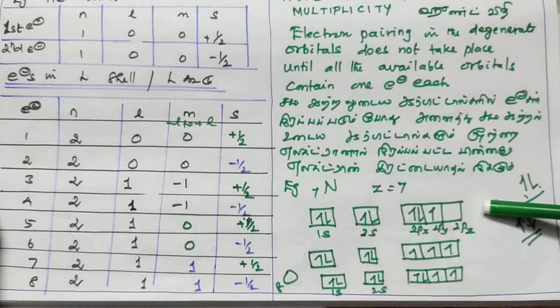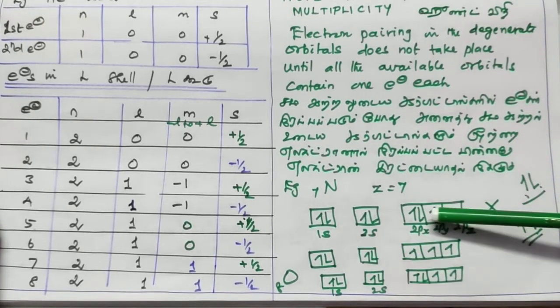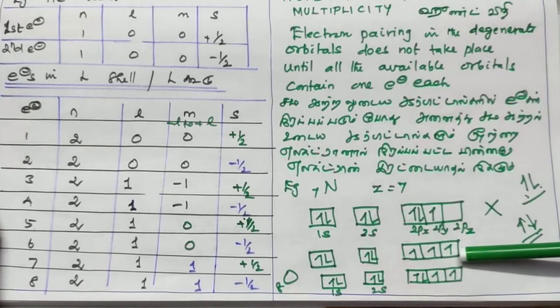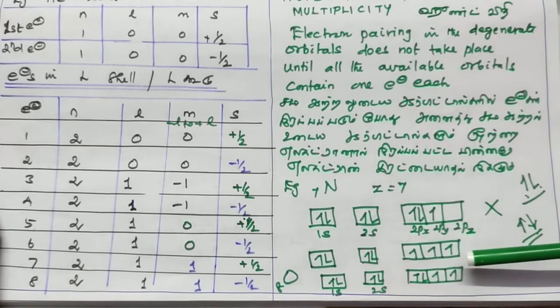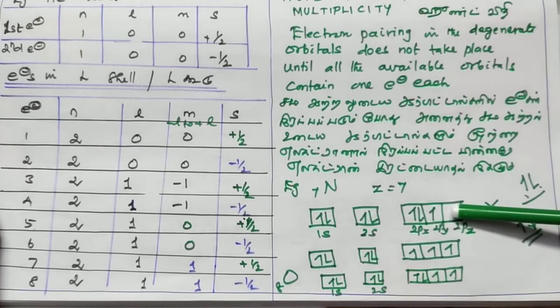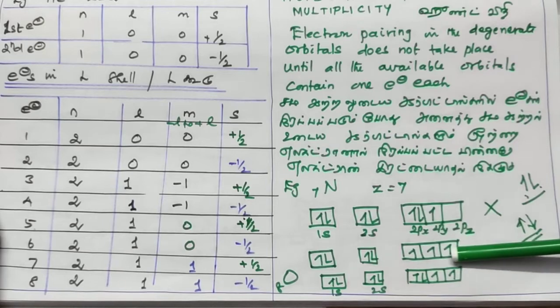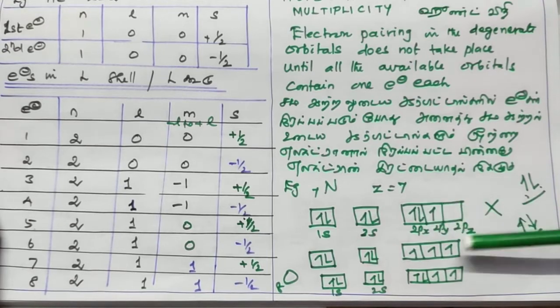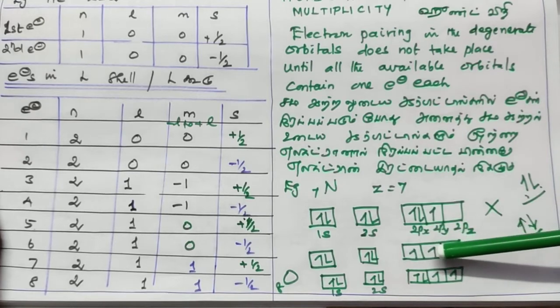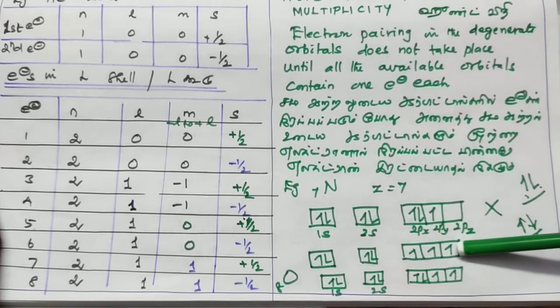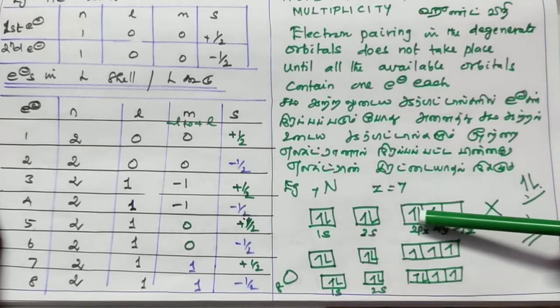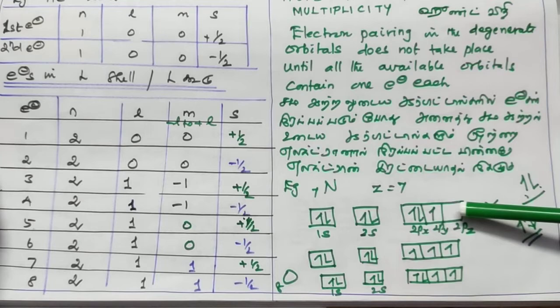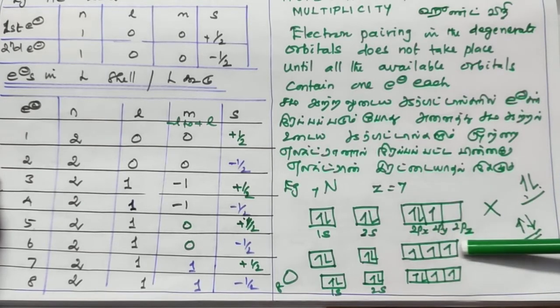This is correct. 1s2, 2s2, 2px1, 2py1, 2pz1. This is a pattern. Next check everything, each one is correct. If there is pairing that is false. Three orbitals are equal. This is false. So, this is correct.